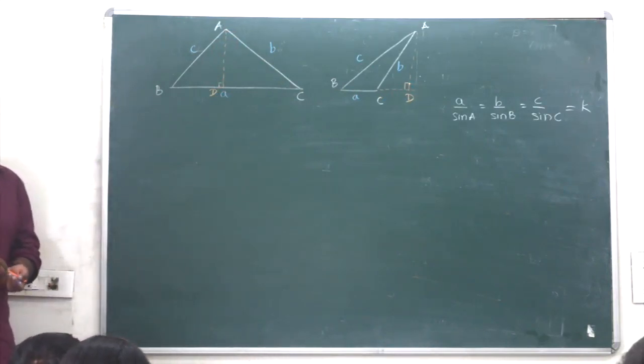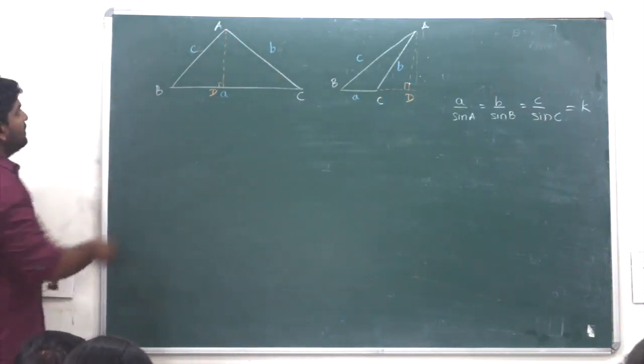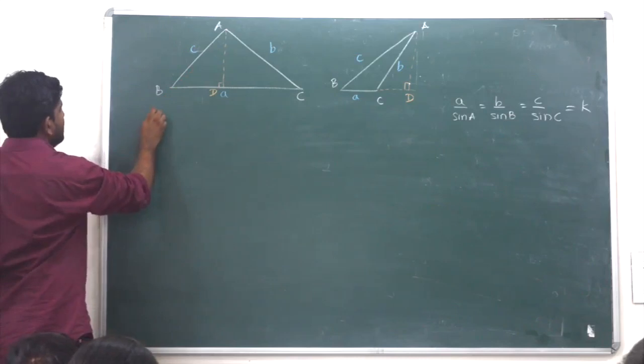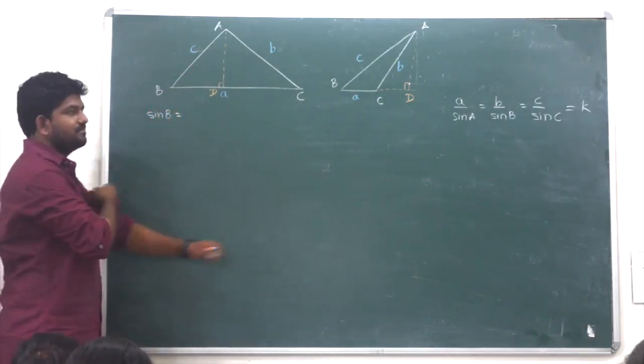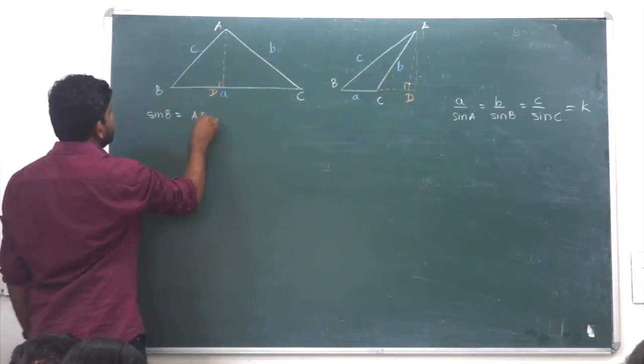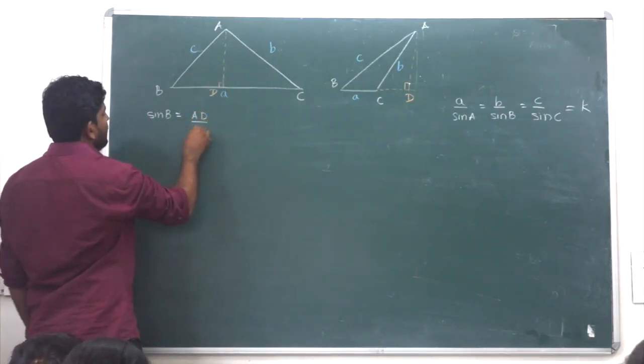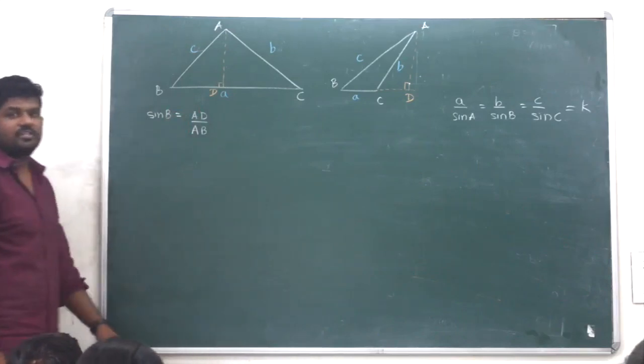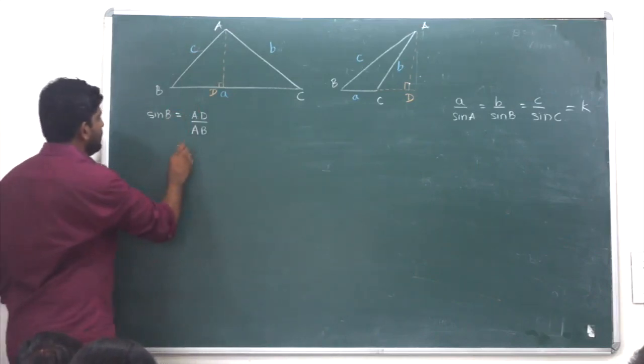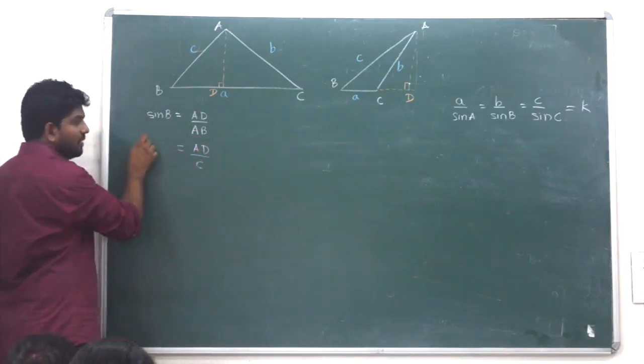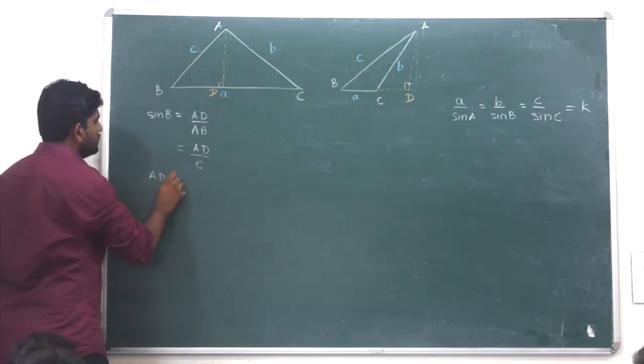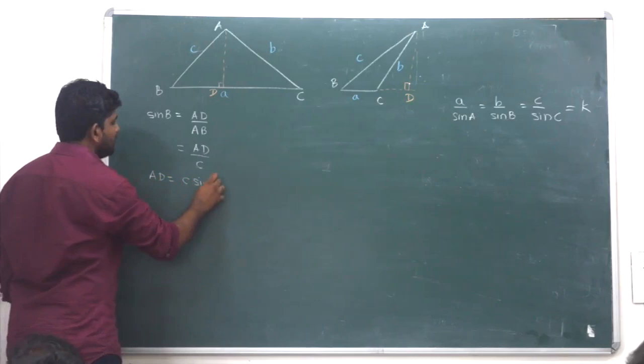I will take a look at the proof. In triangle, in left triangle, what is sine B? Sine B opposite AD upon AB, opposite upon hypotenuse, AD upon what is AB? c here. Sine B...